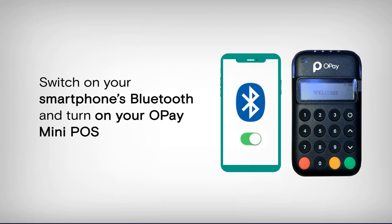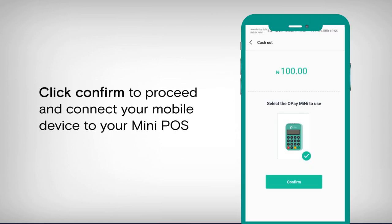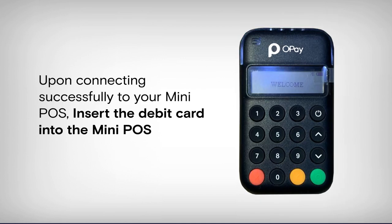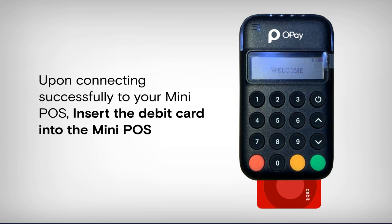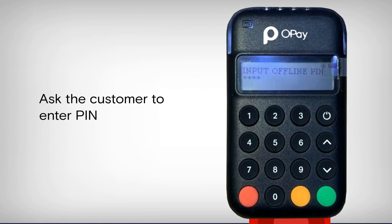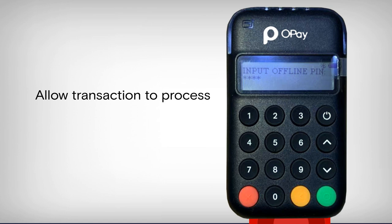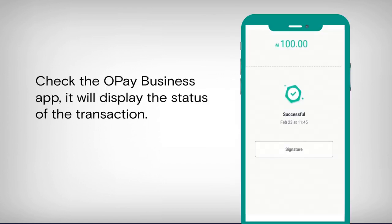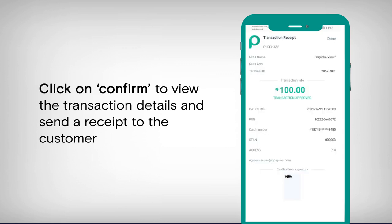Switch on your smartphone's Bluetooth and turn on your Opay mini POS. Click Confirm to proceed and connect your mobile device to the mini POS. Upon connecting successfully, insert the debit card into the Opay mini POS. Select Enter to proceed to the payment PIN page. Ask the customer to enter their PIN and allow the transaction to process. Check the Opay business app — it will display the status of the transaction. Click Confirm to view the transaction details and send a receipt to the customer.